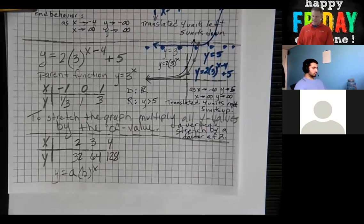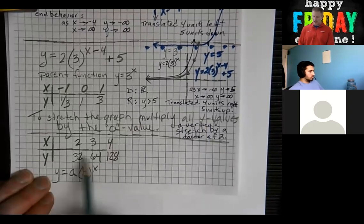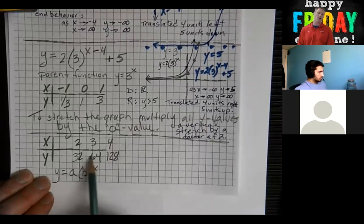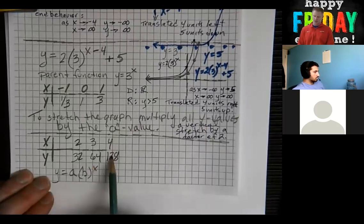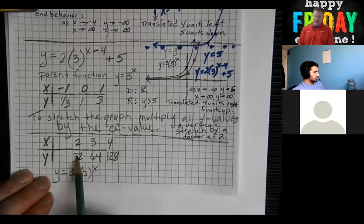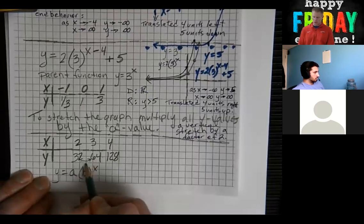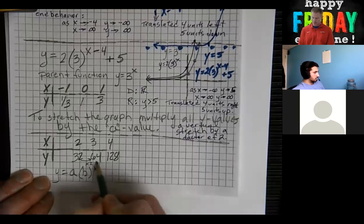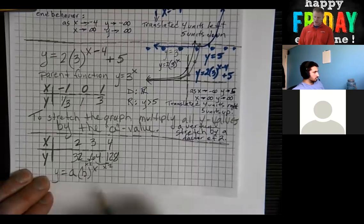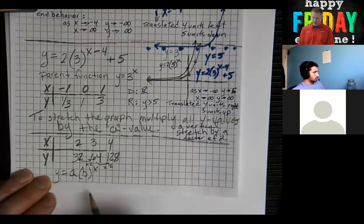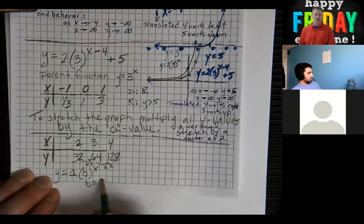So your B value is determined by what number are you multiplying to the right. You might notice that the three is becoming a six and the two is becoming a four. So we are multiplying by two. That tells us that our B value is going to be a two.